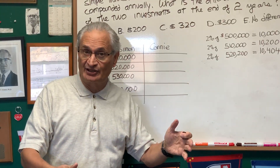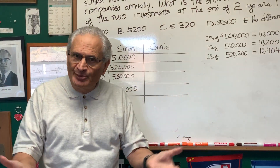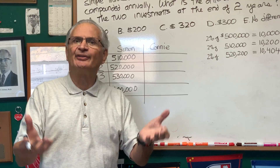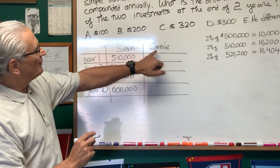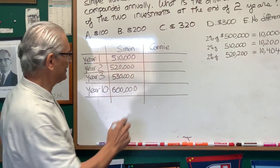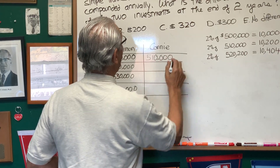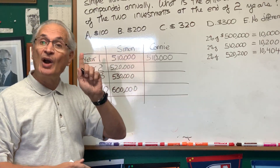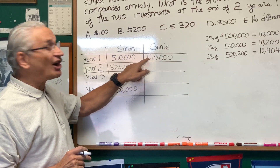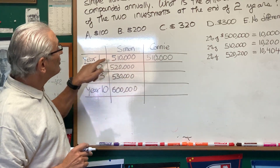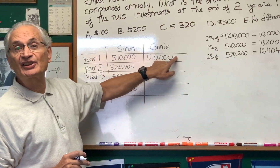Now let's turn to compound interest. Compound interest is when you apply the interest rate to the accumulated sum at the end of every period. So here we go — at the end of the first year, now we're looking at Connie, who's doing the compound interest, at the end of the first year: $510,000. Same as with the simple interest. However, with compound interest, the amount of interest we're going to add is going to be based on this sum — not on the original sum of $500,000, but based on the value of the investment at this point.